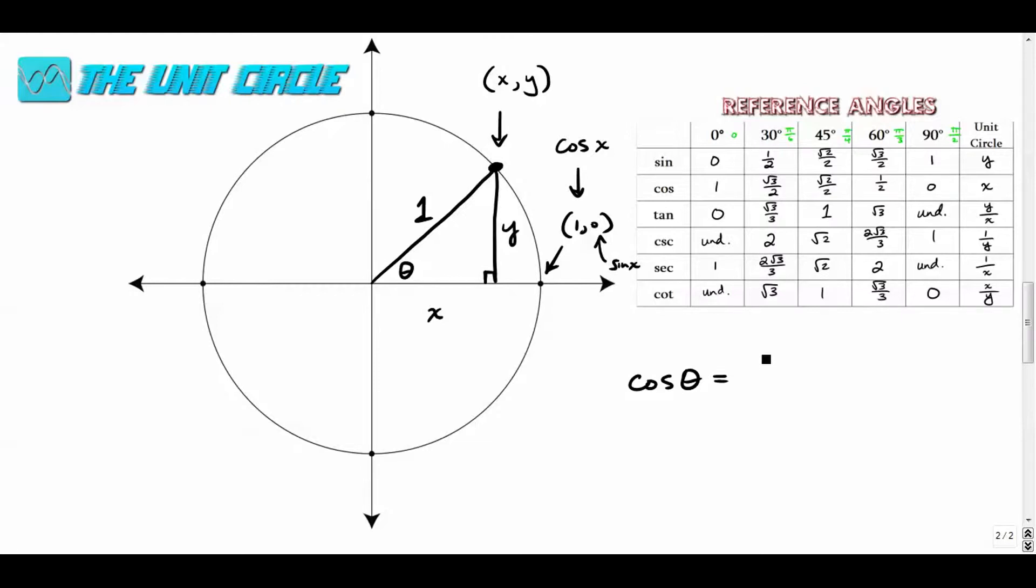Cosine of an angle is adjacent over hypotenuse. Adjacent meaning next to, hypotenuse is one. So this would be x over one or just x. So that's why cosine is the x value. It's always the x value. Cosine is the x value.